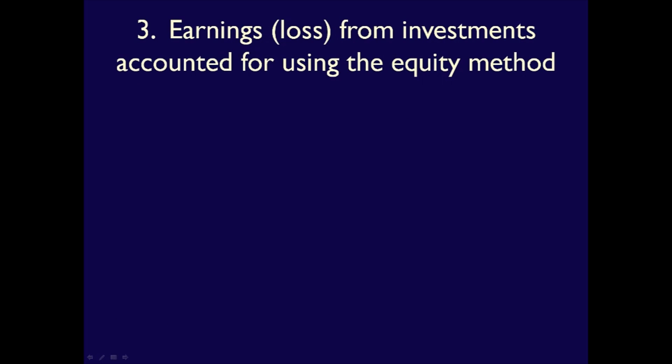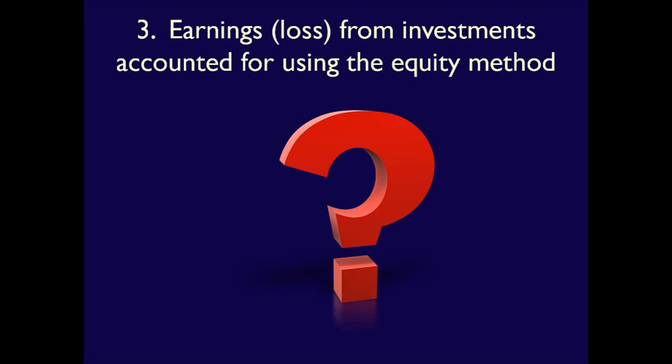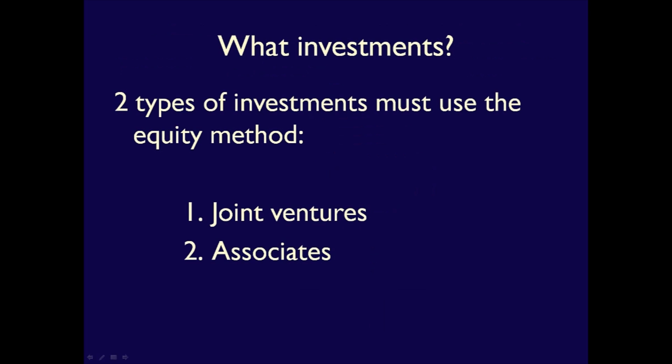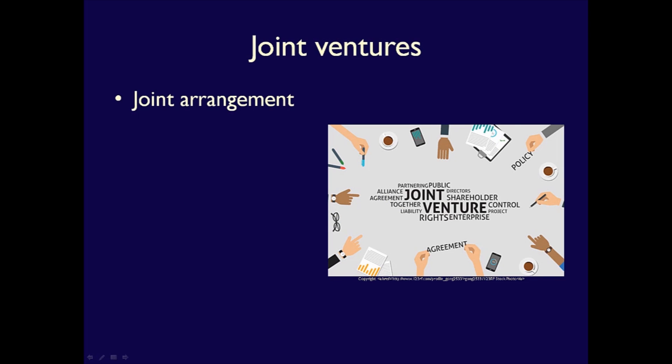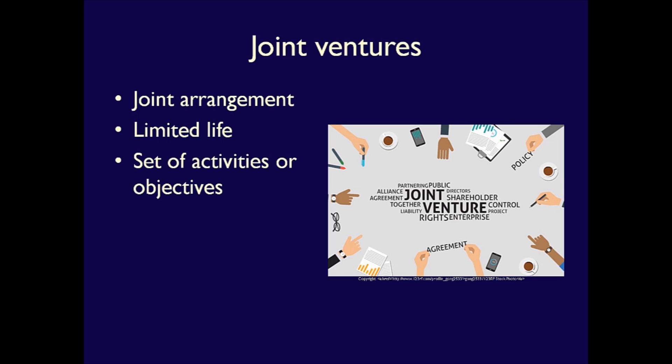Third is the profit or loss from investments accounted for using the equity method — either joint ventures or associates. For a joint venture, we're talking about a joint arrangement as defined under IFRS 11, where two or more entities agree to partner together for a specific reason and sign a contract stating how the partnering will work. The arrangement usually has a limited life and a carefully defined set of activities. An example would be two mining companies with a joint arrangement to explore a specific geographical area in Canada. Key to a joint arrangement is that the parties have joint control, meaning any strategic decisions must be agreed to unanimously by all parties.